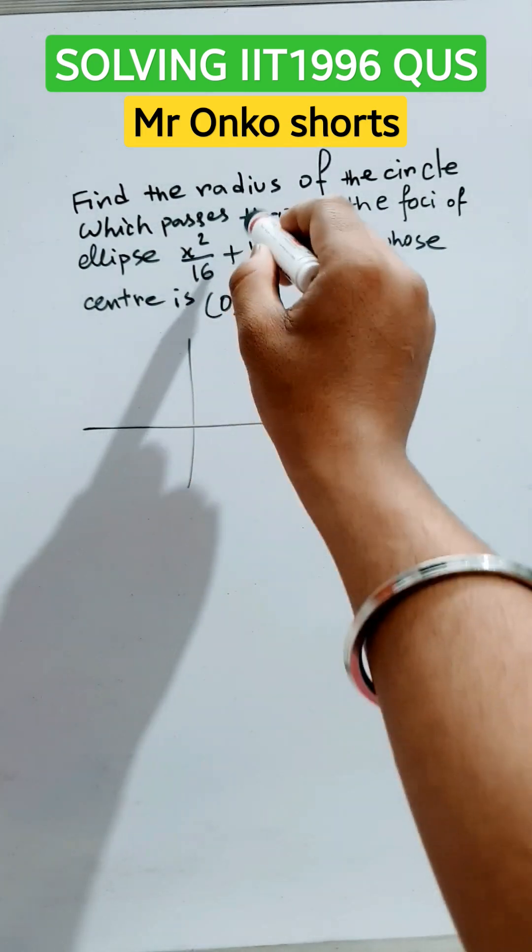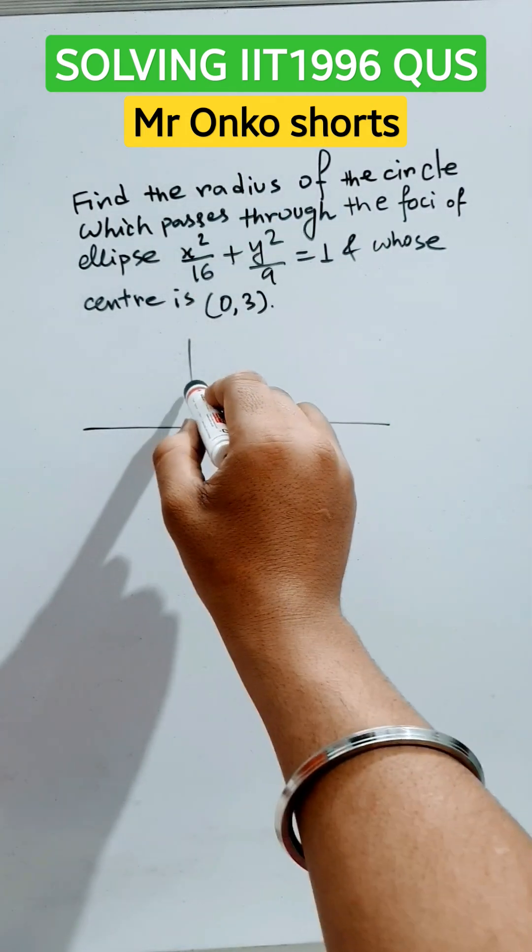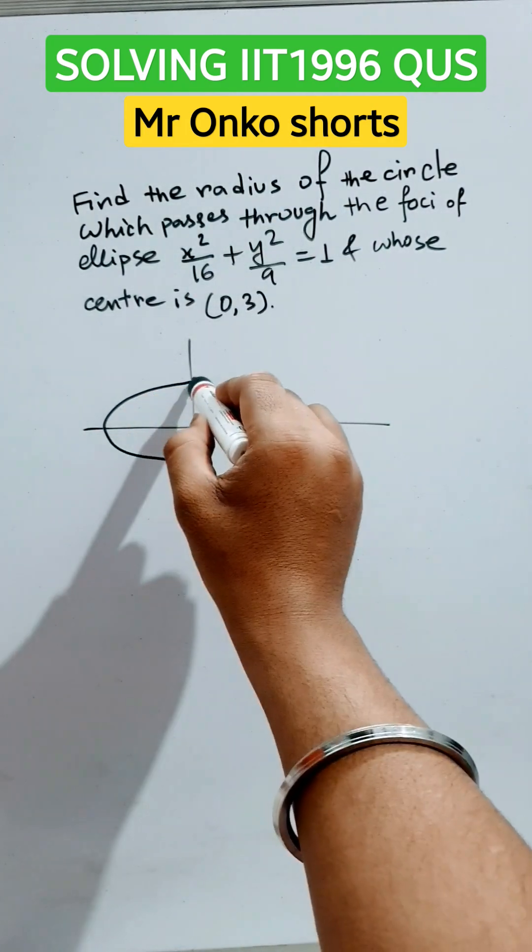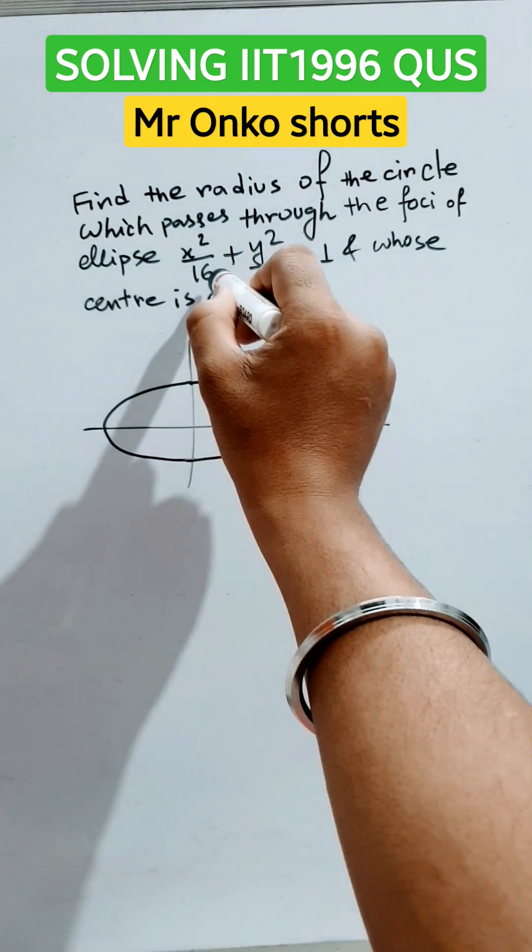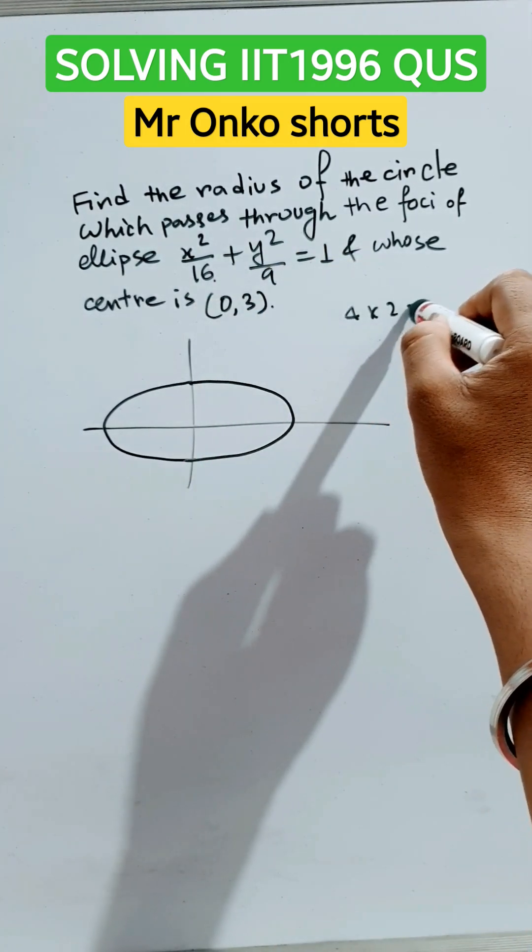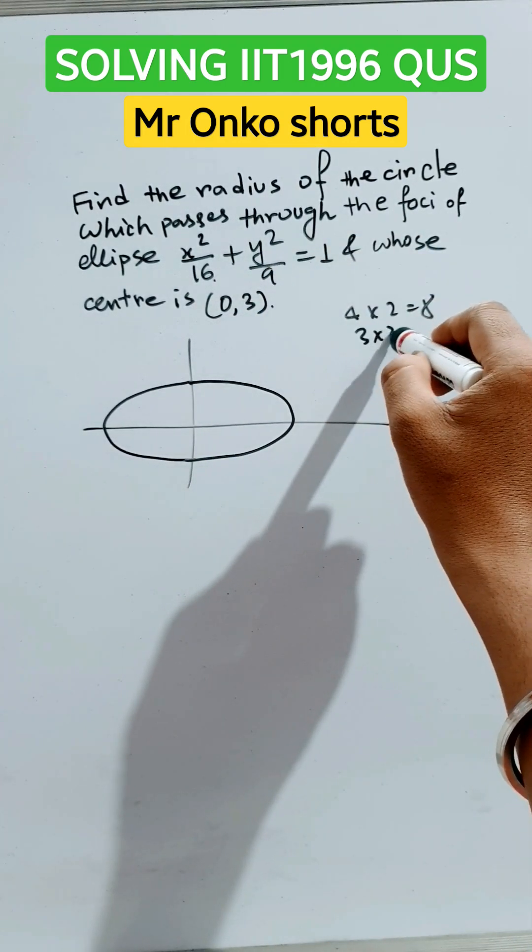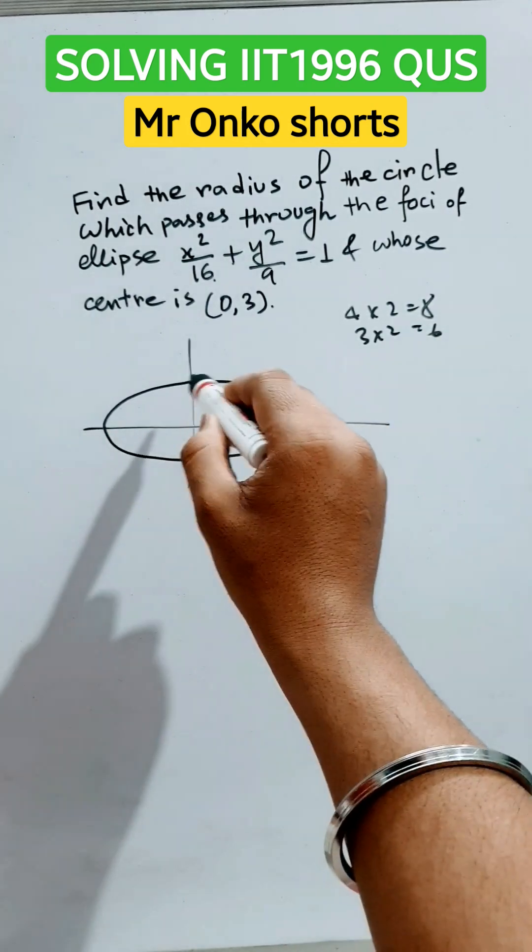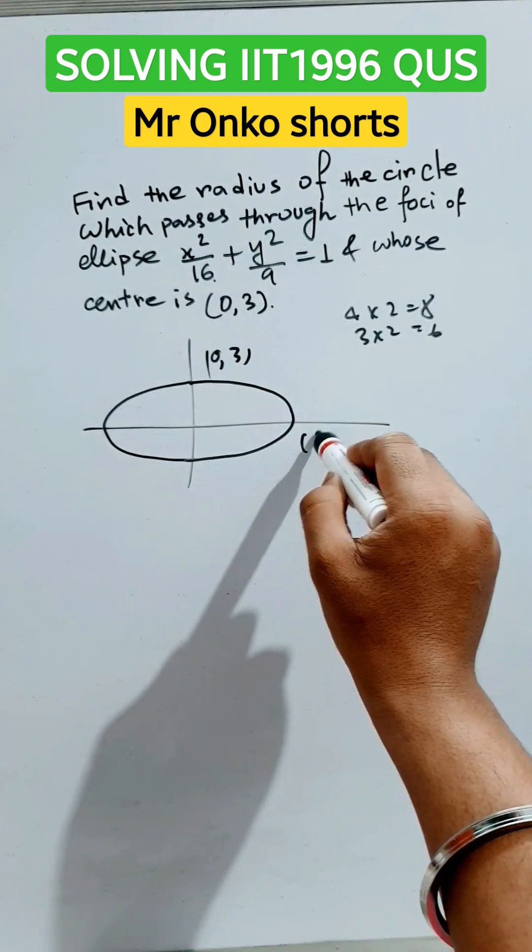So let's find the equation of the ellipse first. The ellipse will be like this because the major axis is 4 times 2, that is 8, and the minor axis will be 3 times 2, that is 6. So this is 8, this is 6, this point is (0,3) and this point is (4,0).